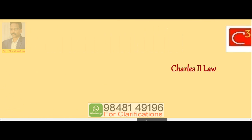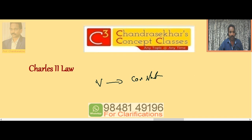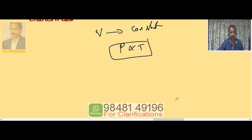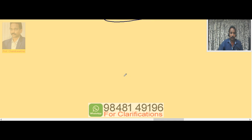Charles' Second Law: now take volume constant. When the volume occupied by the gas is constant, for a given volume of gas, I can write P proportional to T, or simply P₁/P₂ = T₁/T₂. This also applies for a given fixed mass of gas.